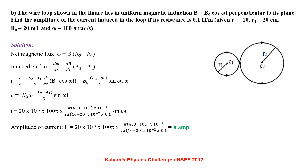A wire loop lies in a uniform magnetic field B = B₀ cos(ωt) perpendicular to its plane. R₁ = 10 cm, R₂ = 20 cm, B₀ = 20 mT, ω = 100π rad/s. Net flux φ = B(A₂−A₁). Induced EMF e = dφ/dt = (dB/dt)(A₂−A₁). Current I = e/R = [(A₂−A₁)/R]·d(B₀ cos ωt)/dt = B₀ω(A₂−A₁)/R · sin(ωt). Substituting numerical values, amplitude of current = π ampere.